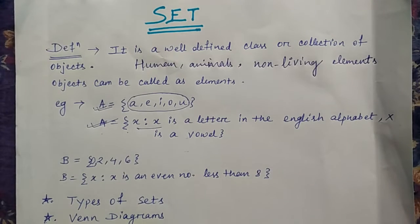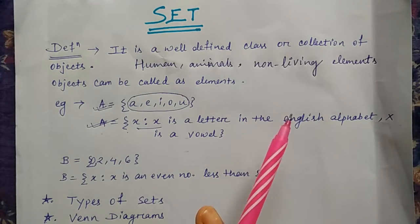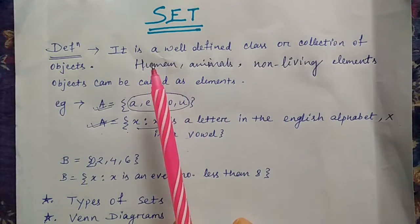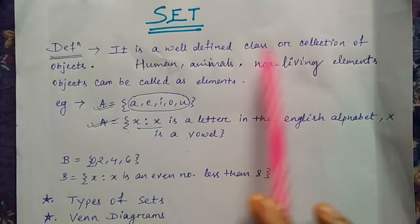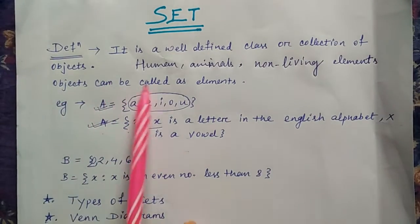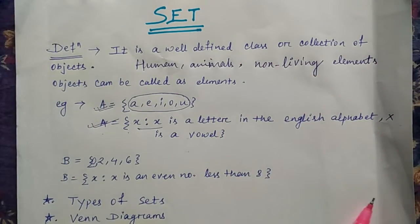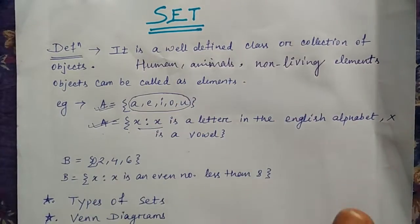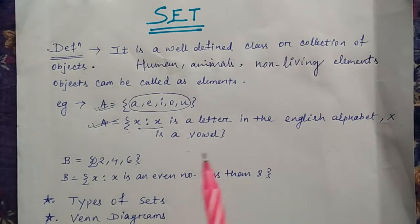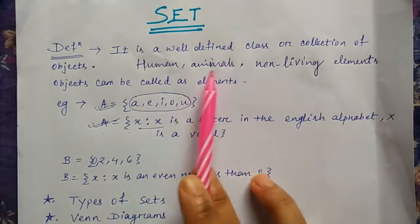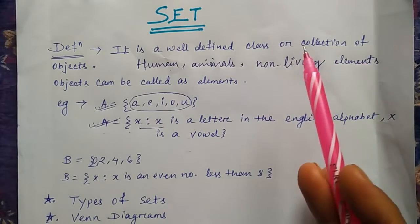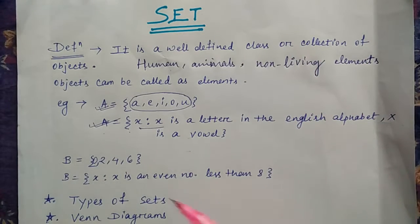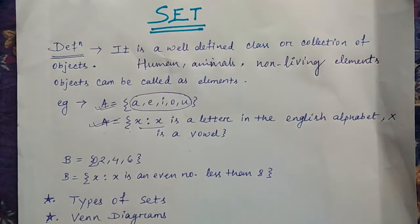Hello students, in this lecture we are going to study about sets, and set is the easiest topic in math. The basic definition is it is a well-defined class or collection of objects, and objects can be called as elements. Whatever things you can see around the world - that can be a human, animal, non-living element, any food item, anything - those things can be considered under a set.